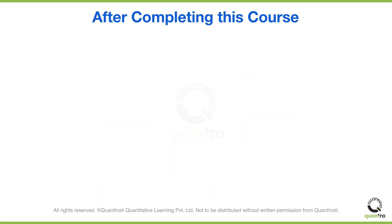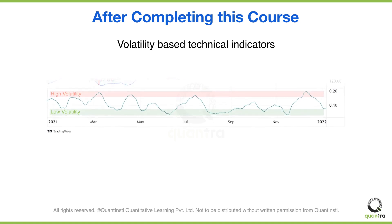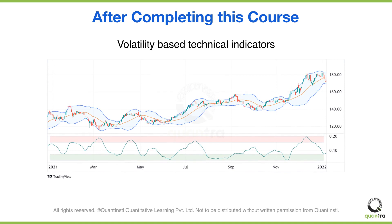You will also learn about volatility-based technical indicators. As you can see, volatility works in phases, and this can be visualized with the help of the Bollinger Band indicator. Later in this course, we will also implement a strategy based on the same, to scan for assets that hold the potential to break out.